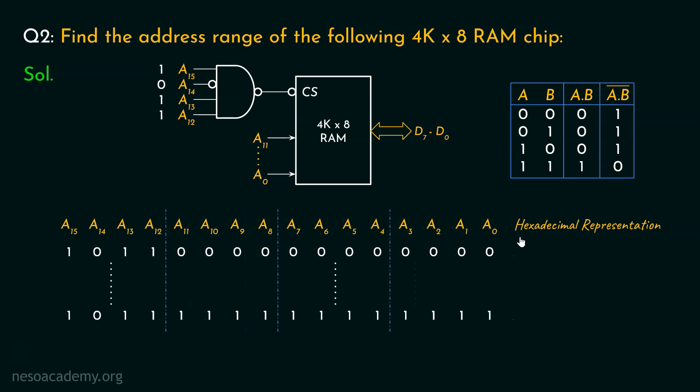So, let's now find out the hexadecimal representation of the address range. Focus on the first nibble, 1011, that is B, which will be followed by 0, 0, and 0. So, the first address is B000. What about the last address? It is B. Now, if you notice, the rest are all 1s. So, clearly, B followed by FFF.